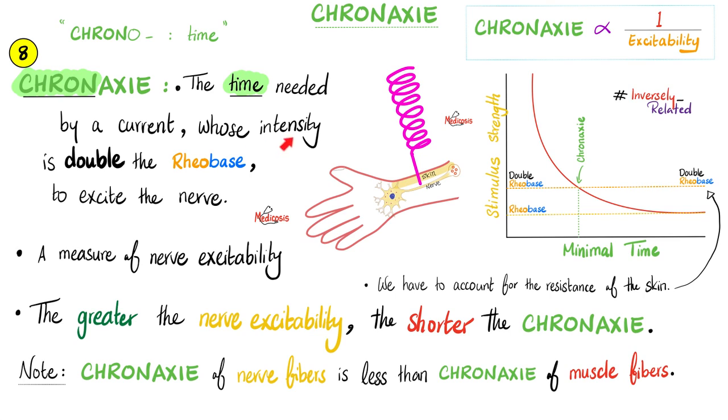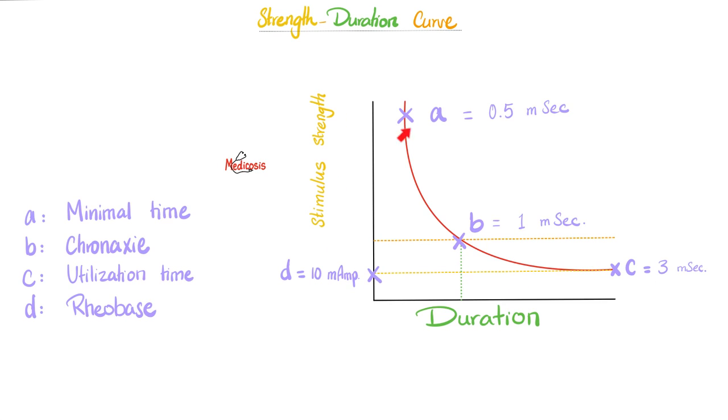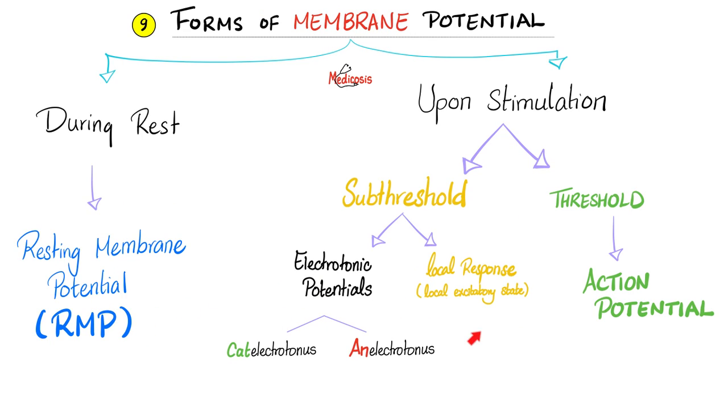Strength and duration are called the strength duration curve and the relation is inverse. Which means the stronger the stimulus, the shorter the duration. What is chronaxie? The time needed by a current whose intensity is double the rheobase to excite the nerve. If you see this graph, A here is minimal time. And as you see, the minimal time is at the highest intensity. This is the rheobase. The time of that rheobase is called utilization time. If you double the rheobase, the time of that double rheobase is called chronaxie.